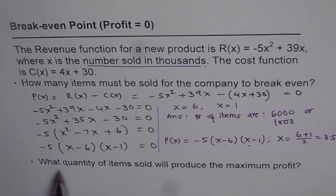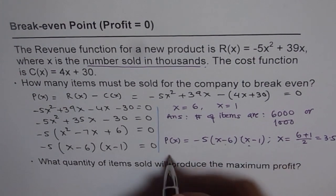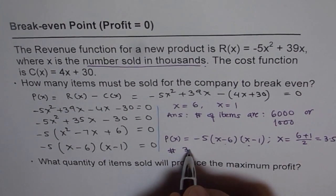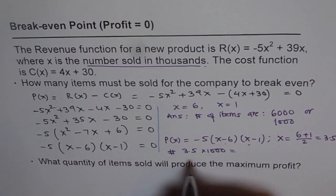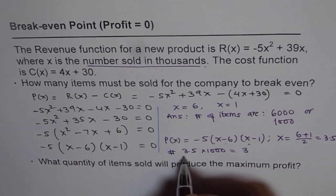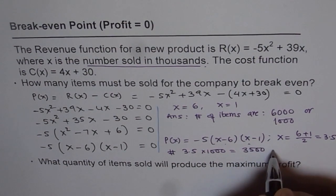So what quantity of items sold will produce maximum profit? So number of items sold should be how much? It should be 3.5 thousand, times 1,000. Do you see that? And therefore, we can write this as 3,500 items to be sold.